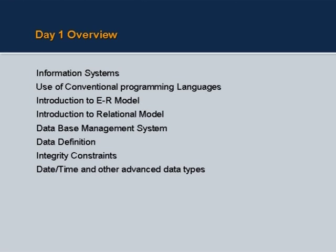We will then introduce the entity relationship model, which is a very important model in representing information system requirements. We ordinarily use object oriented models these days, which we shall cover in our next course, but these are very fundamental models and of course there is a one-to-one mapping between the ER model and the object model. We will then look at the relational model, which comes out of relational algebra foundations led by Professor Codd in 1972, and that is the basis of the entire relational database management system as we see today.